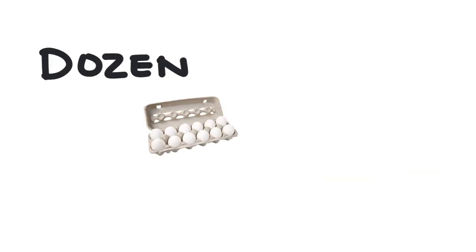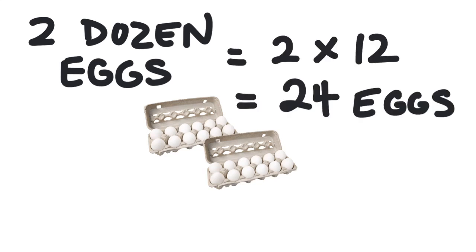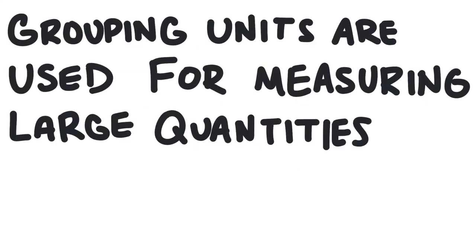The mole is a unit that works much like the unit dozen works. Dozen is a grouping of 12 things. So two dozen eggs is the same thing as 24 eggs. We use these kinds of grouping units when we are dealing with large quantities. Since atoms and molecules are so small, they come in extremely large quantities. So a mole represents a lot of things.